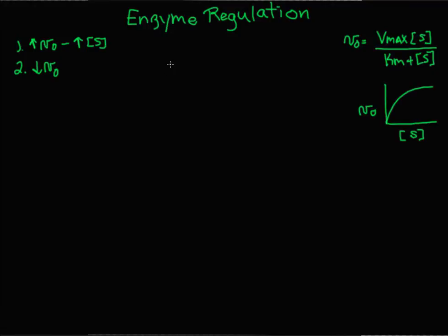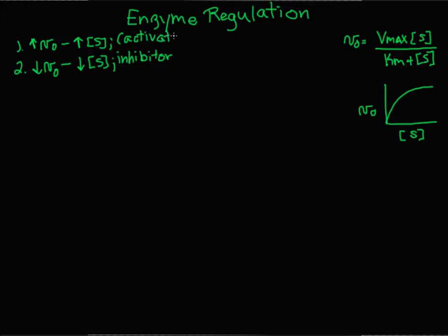We can see this from a linear plot of the velocity of the reaction versus substrate concentration. It also makes sense that if you decrease the substrate concentration, you can decrease the velocity of a reaction. Inhibitors bind to an enzyme and slow down the reaction, so inhibitors can regulate enzymes by slowing down the velocity. You can also increase the velocity by having activators bind to the enzyme, and we'll talk more about activators in the video on allostery.